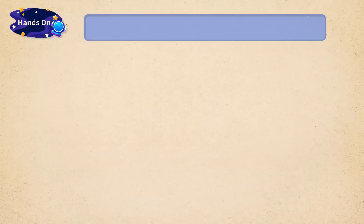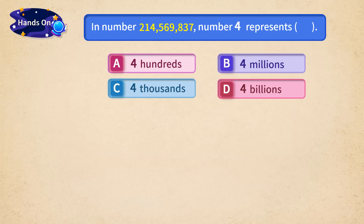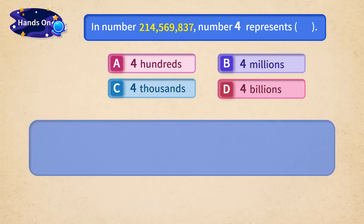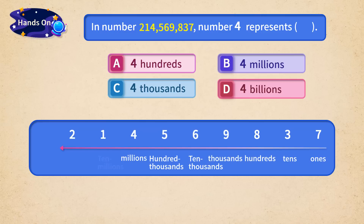Now that we have learned about counting units, let's look at the following problem: two hundred fourteen million five hundred sixty-nine thousand eight hundred thirty-seven. Let's start with the numbers on the right side and arrange them in sequence from right to left. The number four is at the millions place, and the number of digits in this place means there are so many millions. So, the number four means four million. The correct answer is B.